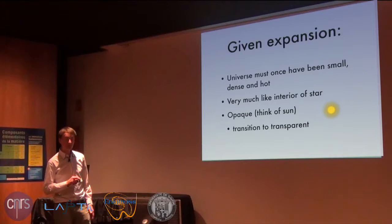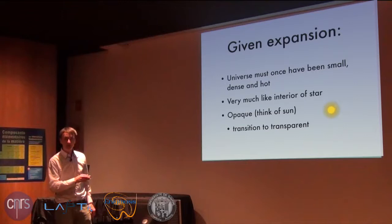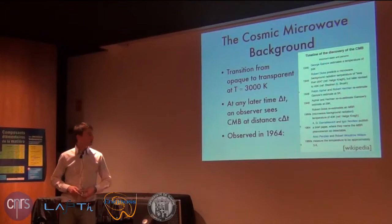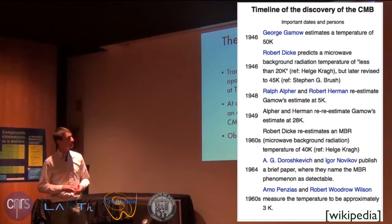If you look at a star and go towards the edge, you go to a higher radius where the star is cooler, and at some point you reach the edge where it becomes transparent. That's exactly the transition from too hot to be transparent to transparent. So the cosmic microwave background was first predicted by the Big Bang theory.